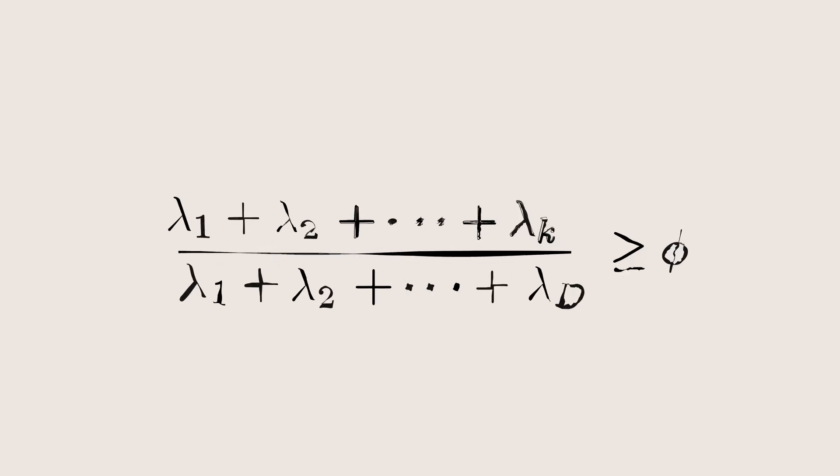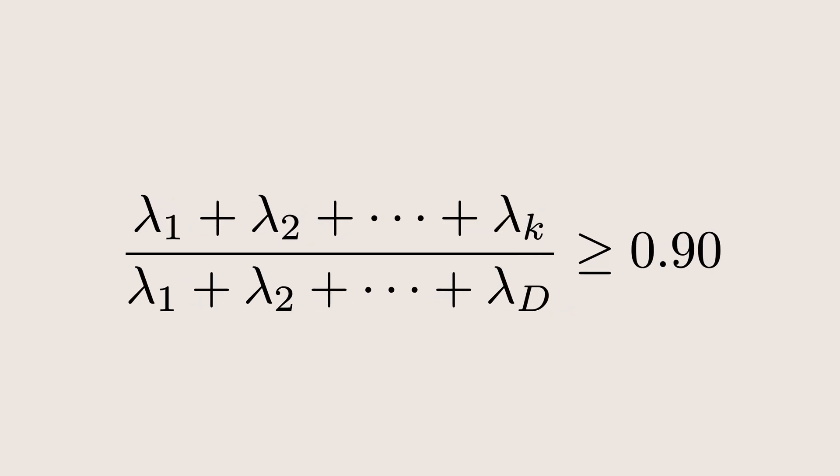Now the choice of k largely depends on how much information you want to retain from the original dataset. One common approach is to sum the variances of the top k principal components and divide it by the total variance of all d components. This gives a ratio, often denoted by phi. You can then choose phi to be a value like 0.9 or 0.95, depending on how much information you want to preserve.